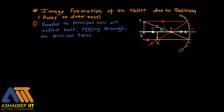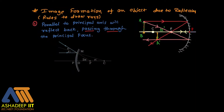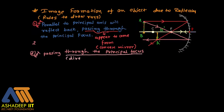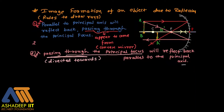Rule 1: A ray parallel to the principal axis, after reflection, passes through the principal focus — for concave mirror. For convex mirror, the reflected ray appears to come from the focal point behind the mirror when traced back. Rule 2: A ray passing through the principal focus reflects back parallel to the principal axis.